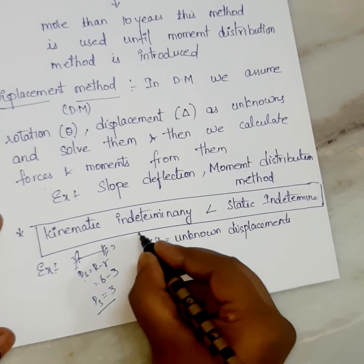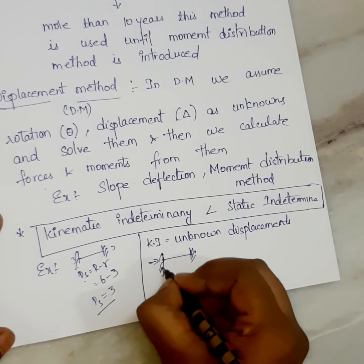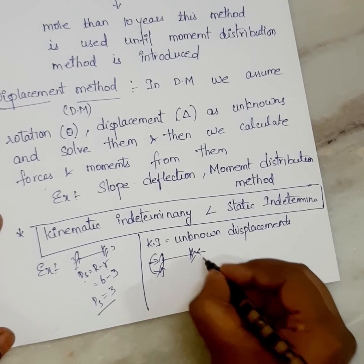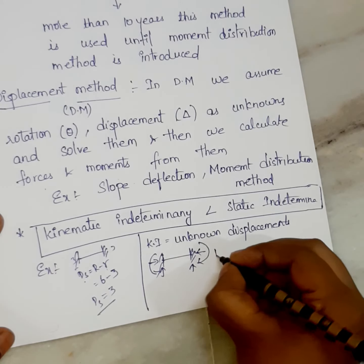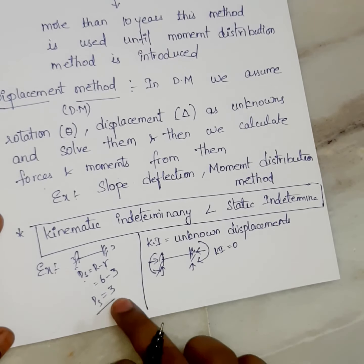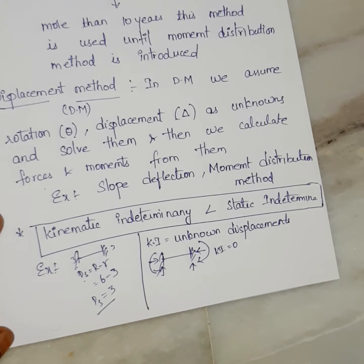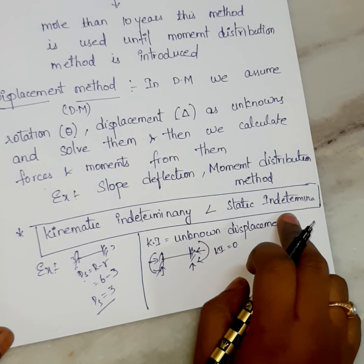For a fixed beam, horizontal force, vertical force, and moment act at each support. Because the beam is fixed, displacements are zero. So kinematic indeterminacy for a fixed beam is 0. Compared to a fixed beam, kinematic indeterminacy will be very less compared to the static indeterminacy of this type of structure.